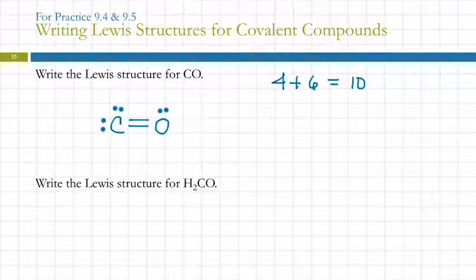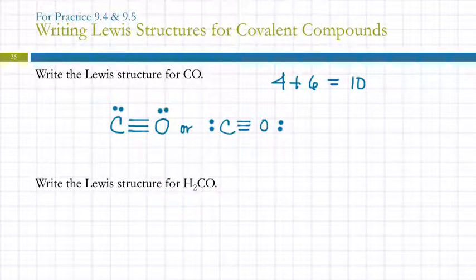So I'm going to take this lone pair and make it into a bonding pair. This, of course, is not what is happening when these atoms bond together, but this is how we do the Lewis structure. Now this carbon has two, four, six, eight, and the oxygen has two, four, six, eight. Everybody's got eight. That looks a little weird. So we might draw it like this. I like to make them a little more symmetrical, but those are equivalent.